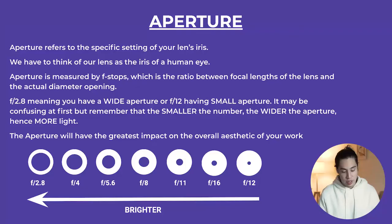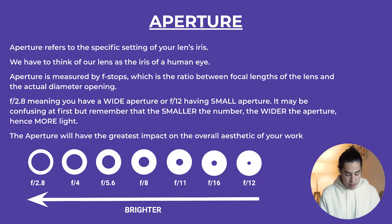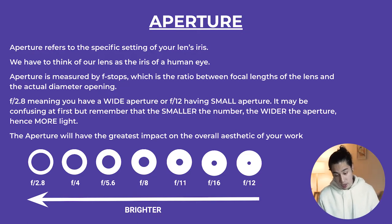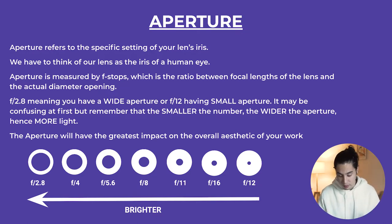So once again at the bottom of the screen, you can see from f2.8 being the widest aperture — letting in the most amount of light — the scales getting brighter as the numbers go lower, as the aperture gets wider. Simple.